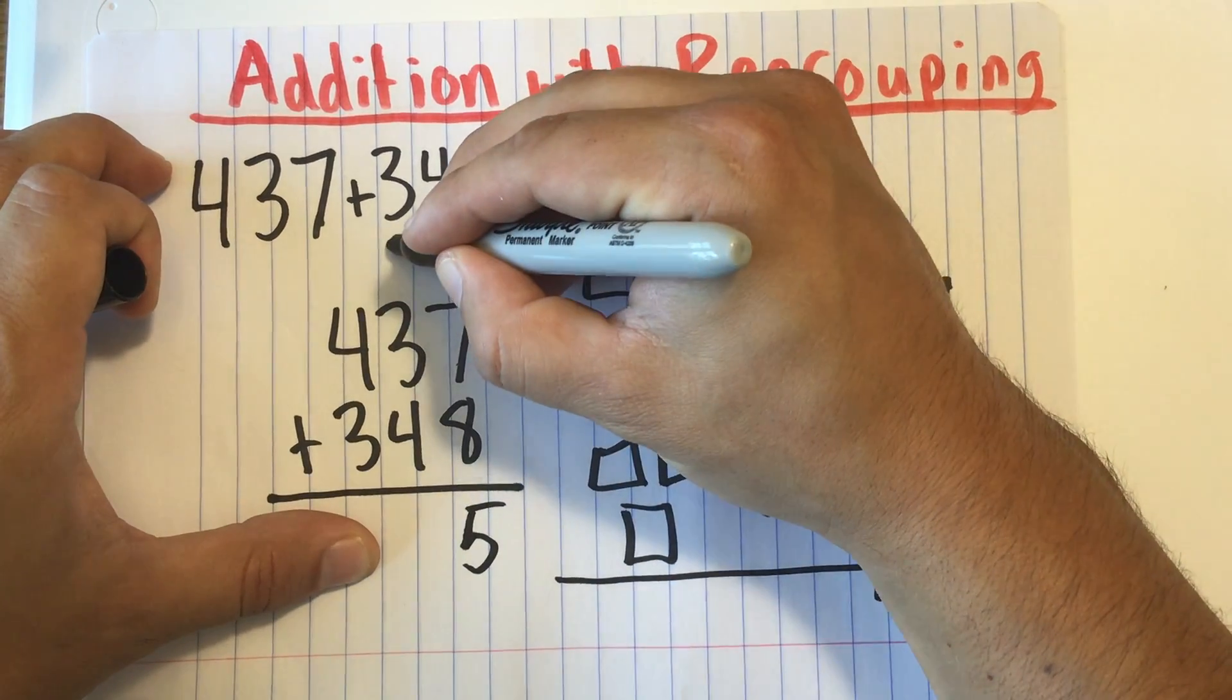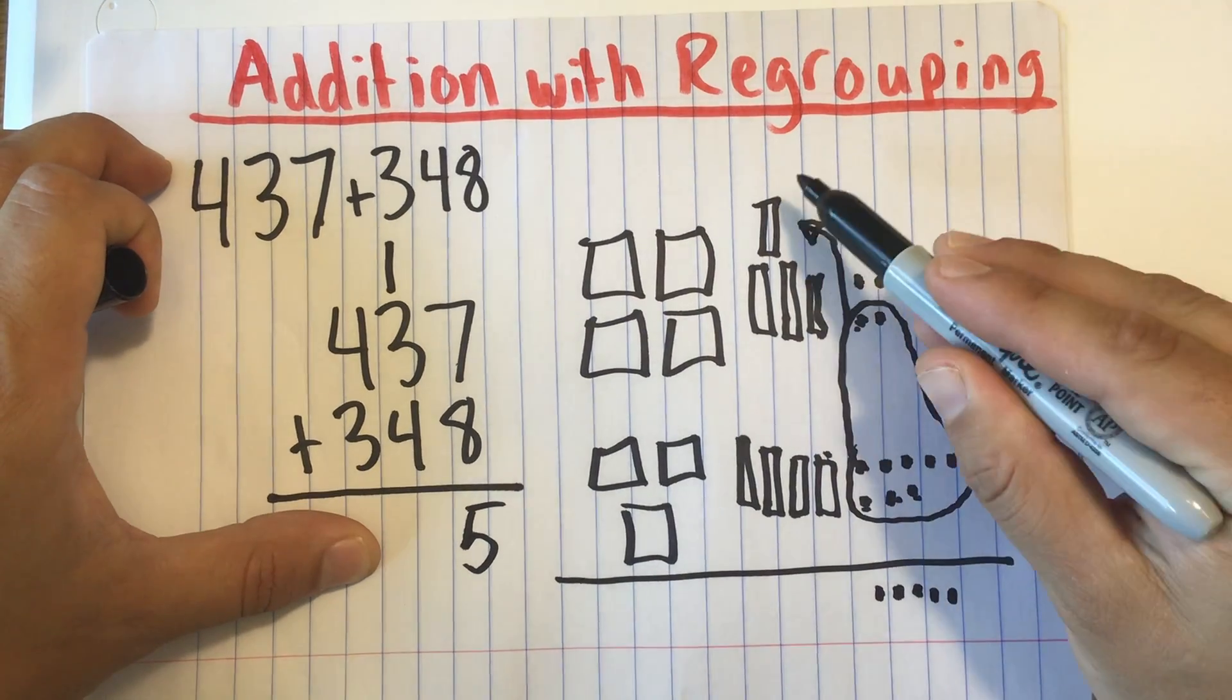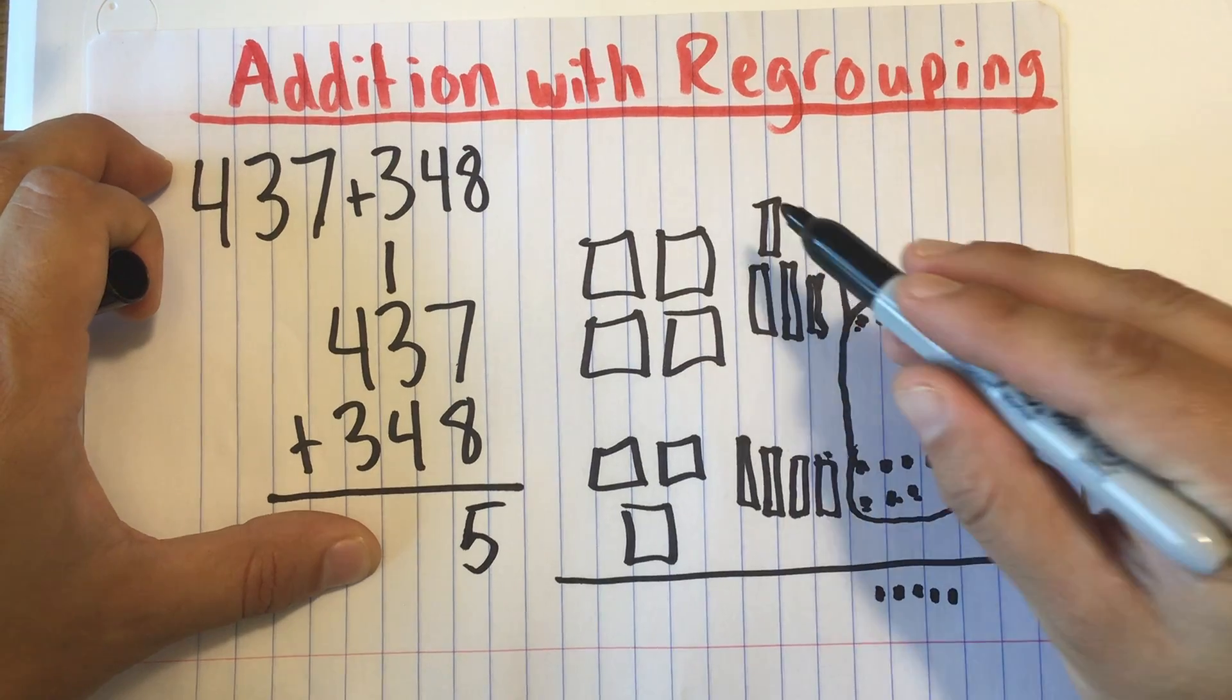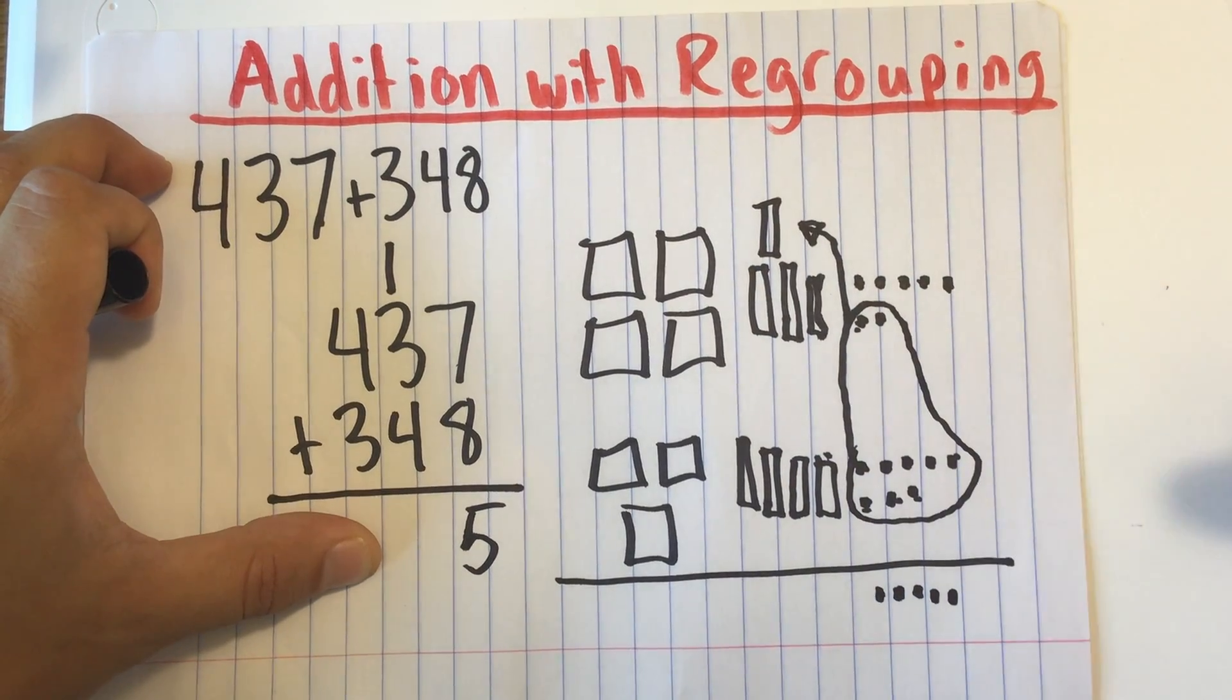And I would put the 1 ten that I made up here. Okay? So I made that 10. I regrouped that 10, 10 ones into 1 ten up there.